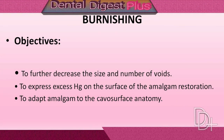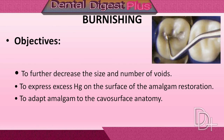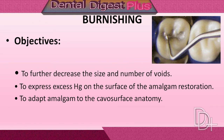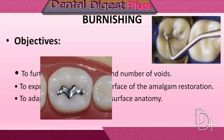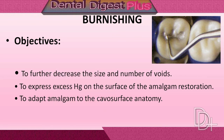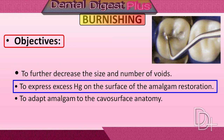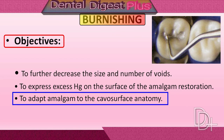Burnishing. Following carving, we check the occlusion and then carry out a brief final burnish, also called post-carve burnishing. A large burnisher at low pressure load is used, burnishing outwards towards the margins of the restoration. This improves the smoothness of the restoration. Heat generation should be avoided — if temperature rises above 60 degrees centigrade, it causes release of mercury, which accelerates corrosion and can cause fracture at margins. The objectives of burnishing are to further decrease the size and number of voids, to express excess mercury on the surface, and to adapt amalgam to the cavo-surface anatomy.